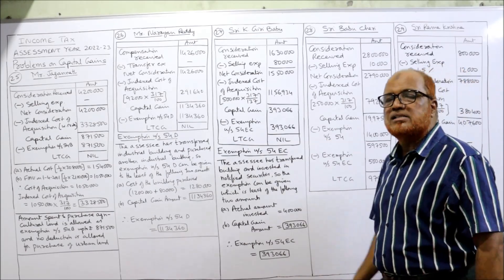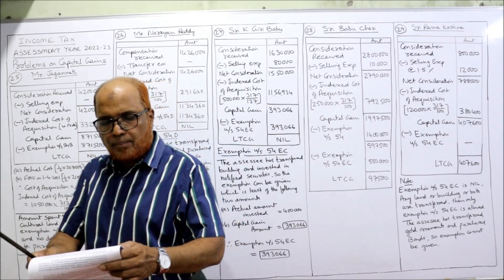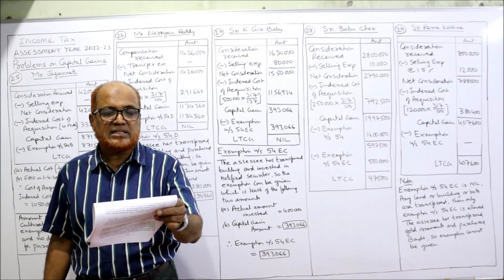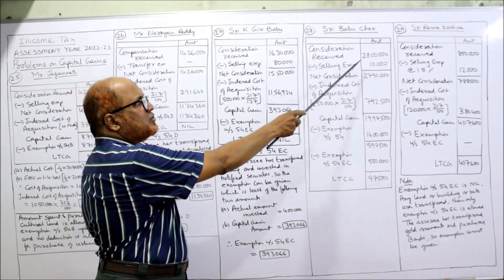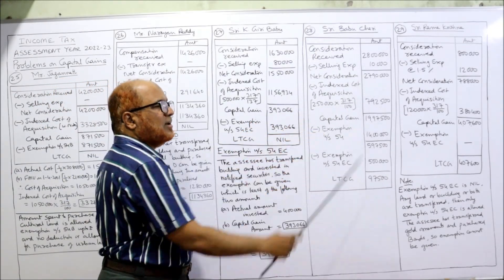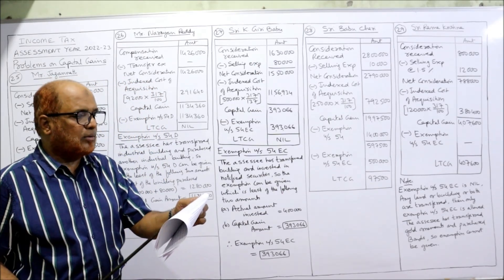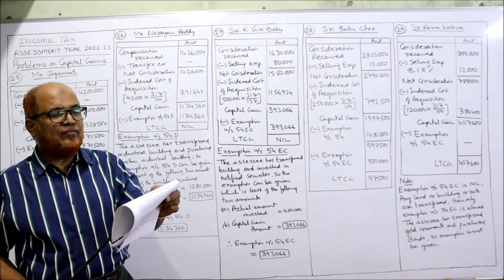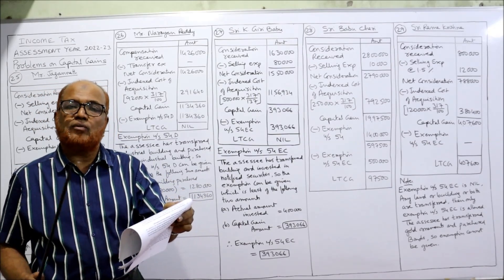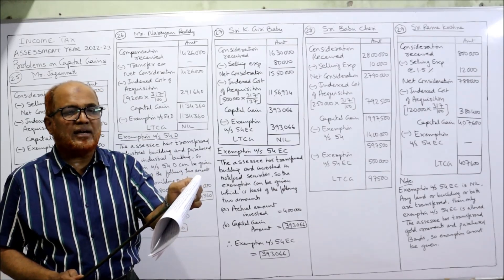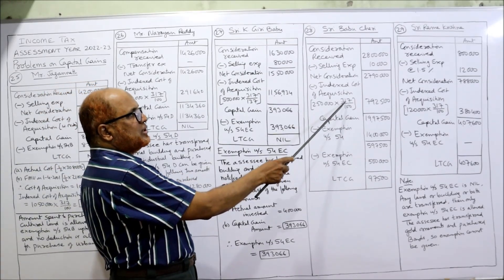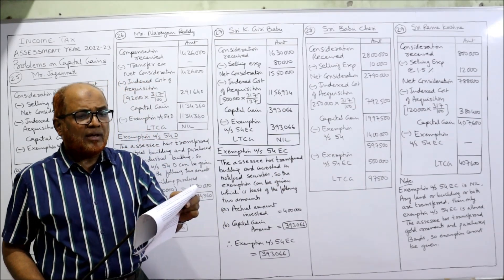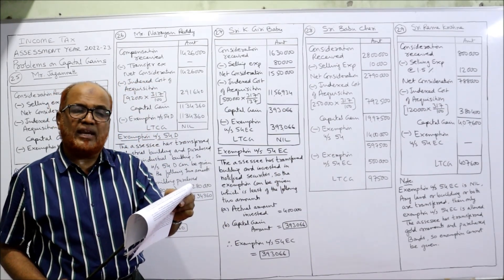28th problem. Sri Babu Chali sold his house on 25th March 2022 for 28 lakh. Selling expenses 10,000, so net consideration is 27 lakh 90,000. The house was purchased in the year 1998-99 for 2 lakh, and the FMV on 1/4/2001 is 2 lakh 50,000. Whichever is higher — actual cost or FMV — FMV is higher at 2 lakh 50,000. Indexed cost = 2 lakh 50,000 × 317 / 100 = 7 lakh 92,500. Deducting from 27 lakh 90,000 gives capital gain of 19 lakh 97,500.